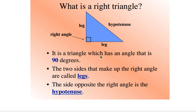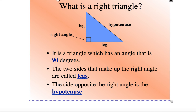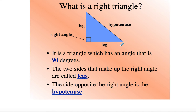The lesson today is about a right triangle. These notes are on Canvas, so if you want to get some extra credit, you can fill in the notes as you go. A right triangle is a triangle that has a 90-degree angle, and the other two angles will have to be acute angles. The two sides that make up the right triangle are called the legs, and the side opposite the right angle is called the hypotenuse.